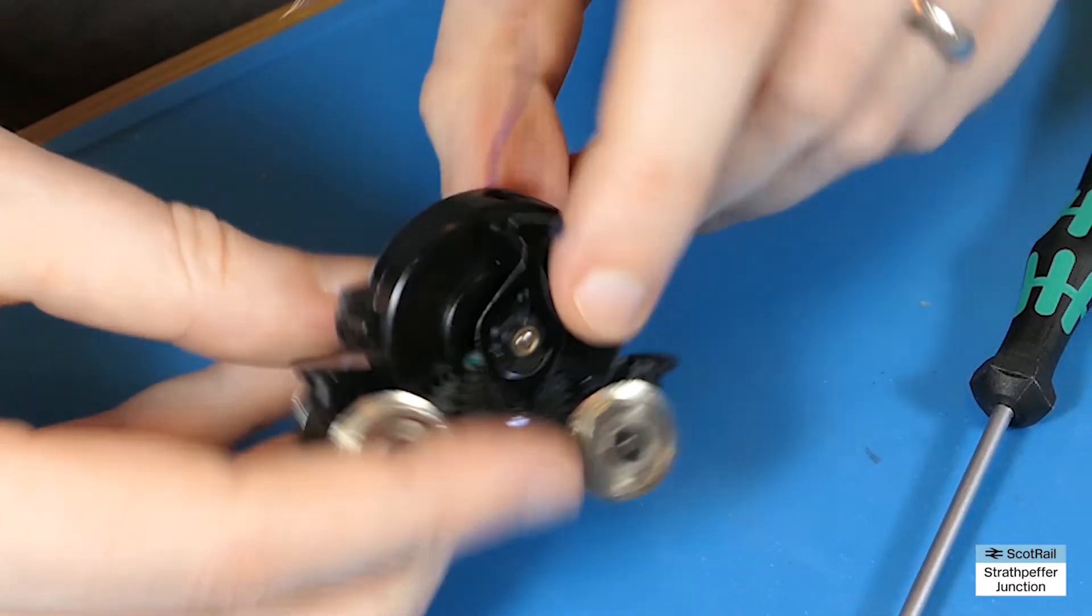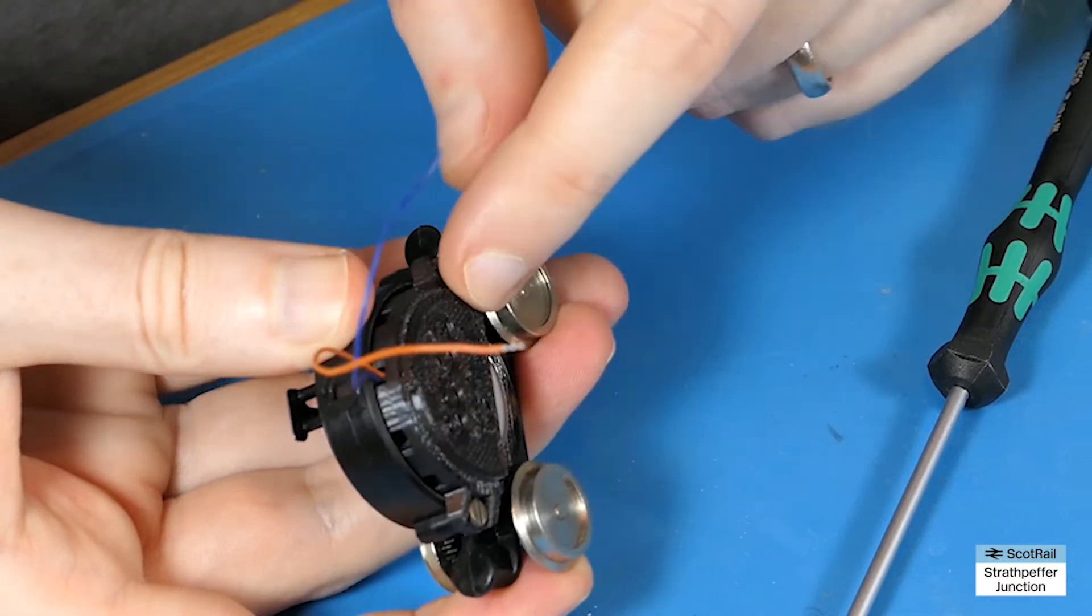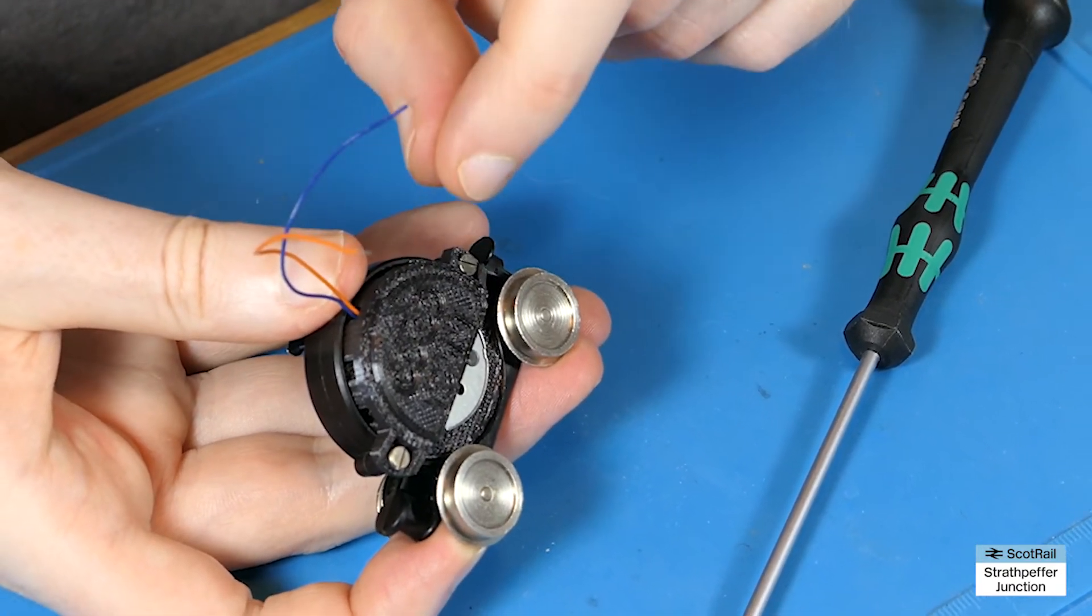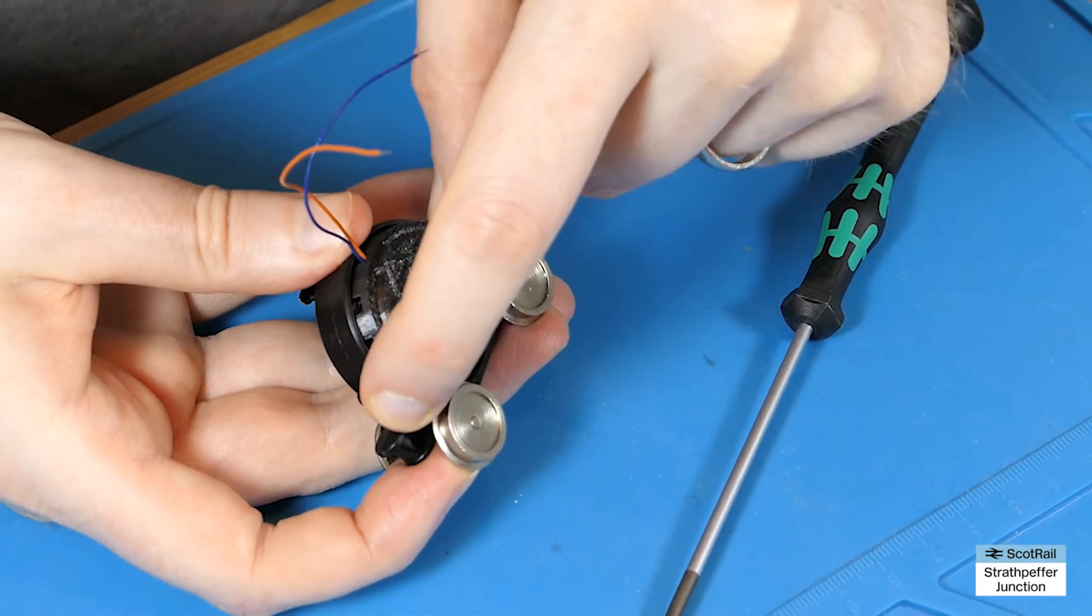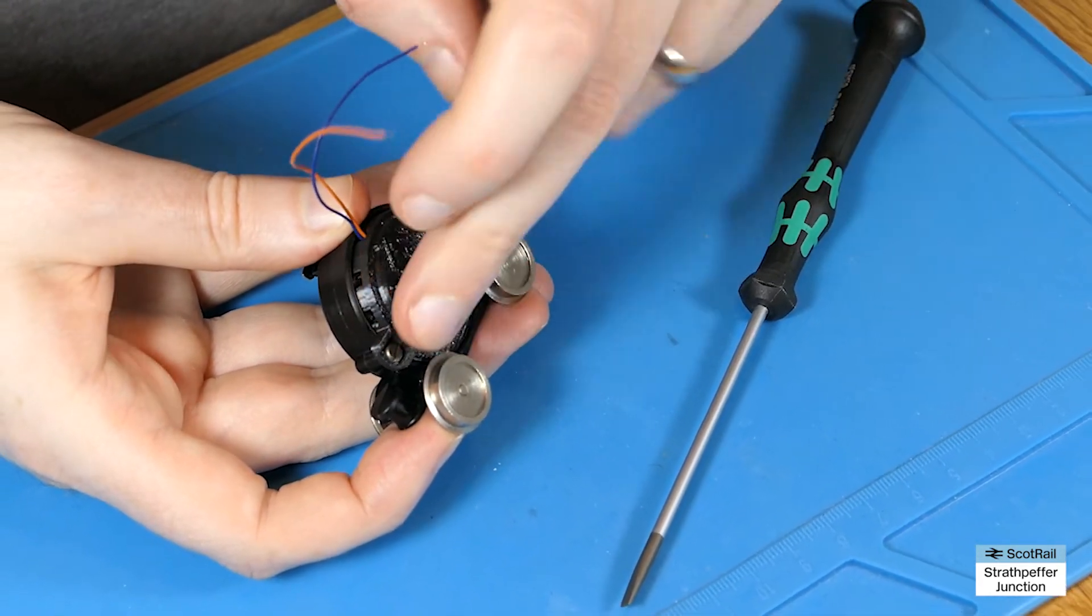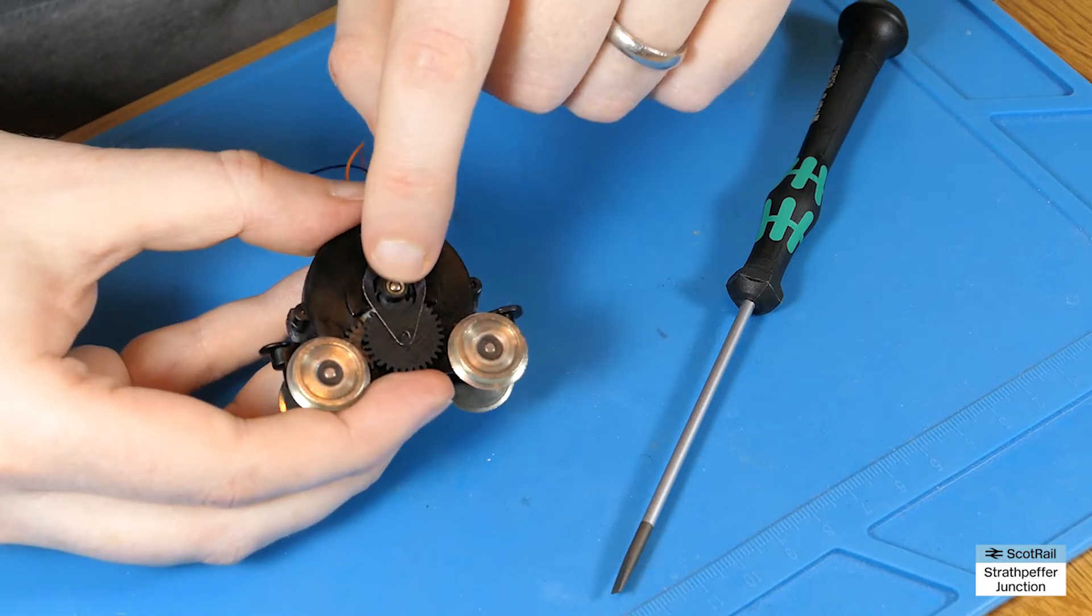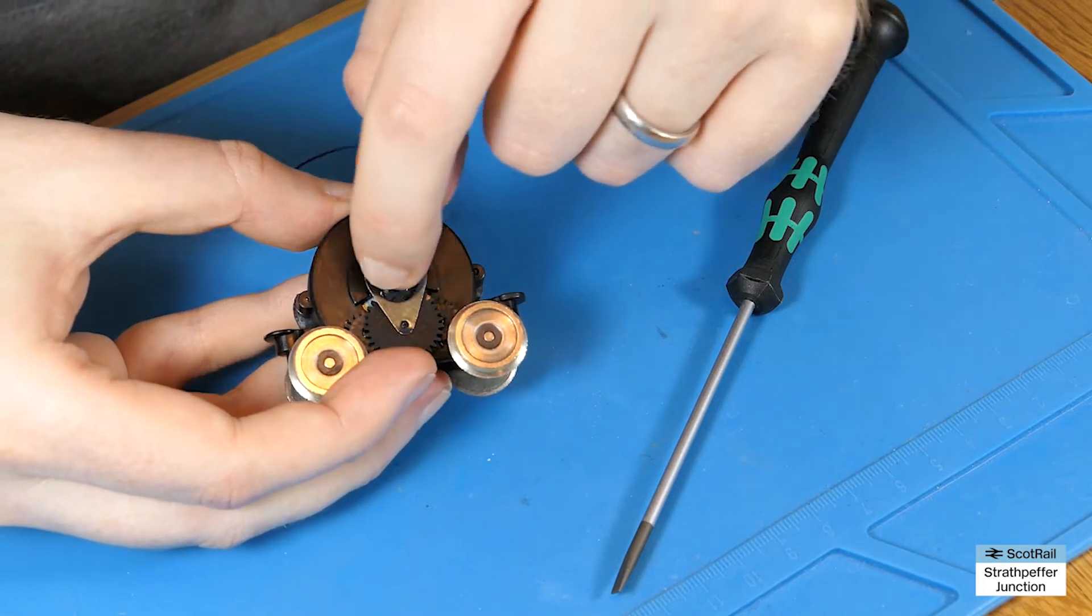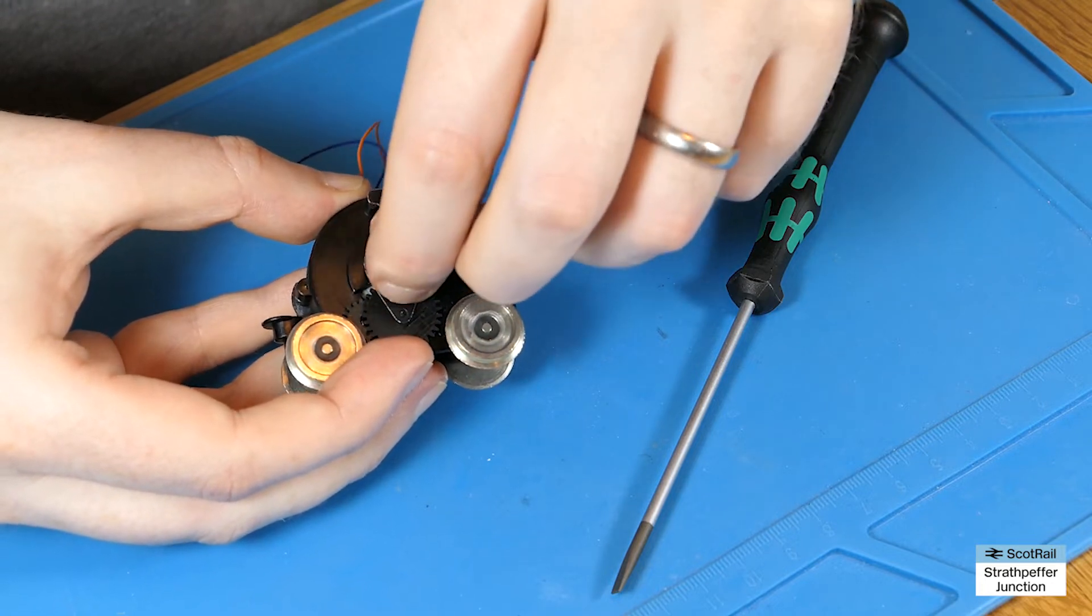What I want to do then is slacken these screws off slightly because they don't need to be tightened too tightly at all, just enough to hold this so that it doesn't move, but do not tighten them too much. The other thing is to realign and readjust it so that that central shaft there and the gear there is nice and central.